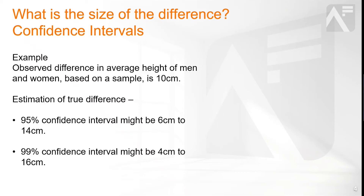The 99% confidence interval might be 4 centimetres to 16 centimetres. This means that there is 99% confidence that the true difference lies between 4 centimetres and 16 centimetres.